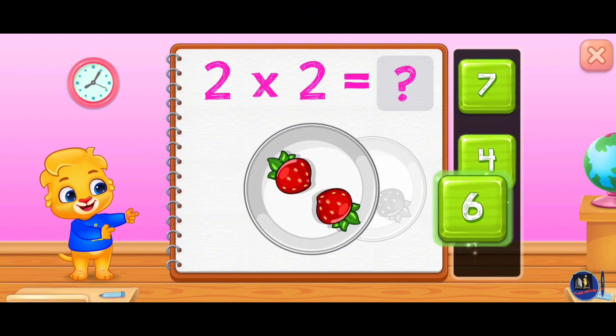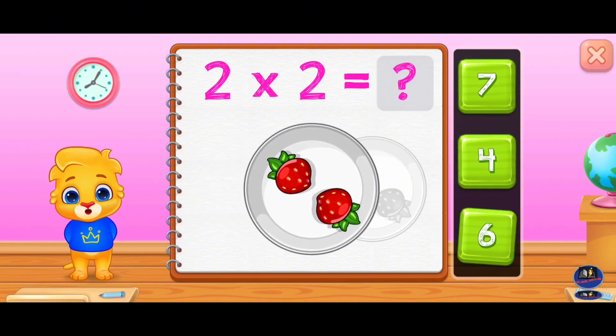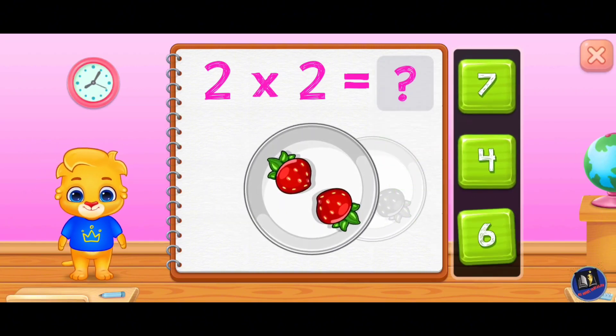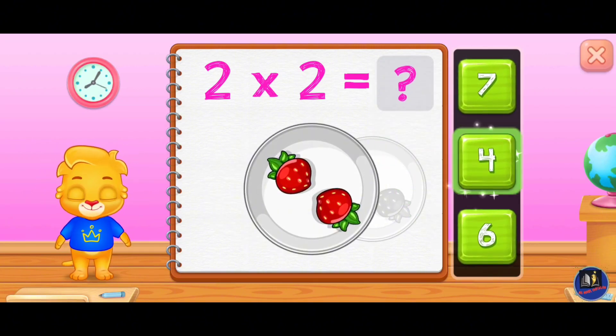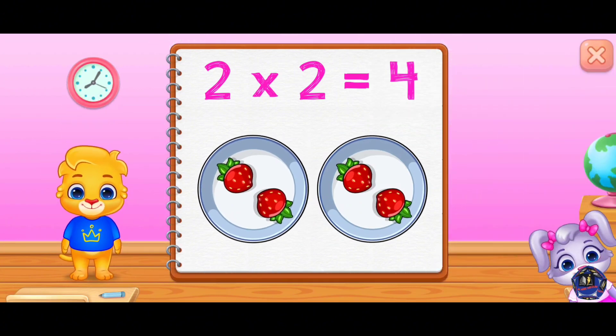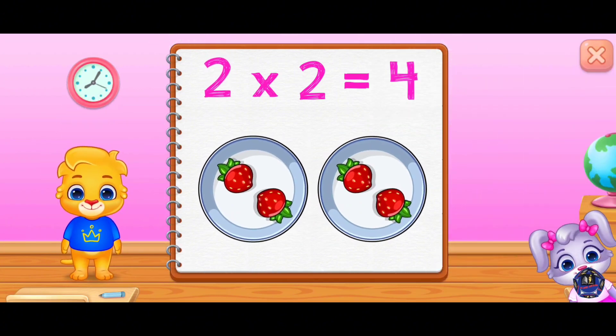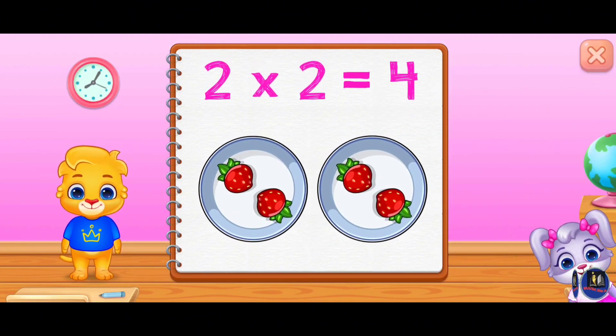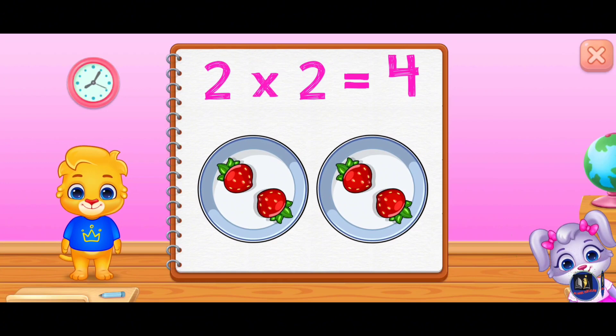Six, six, four. Two times two equals four.